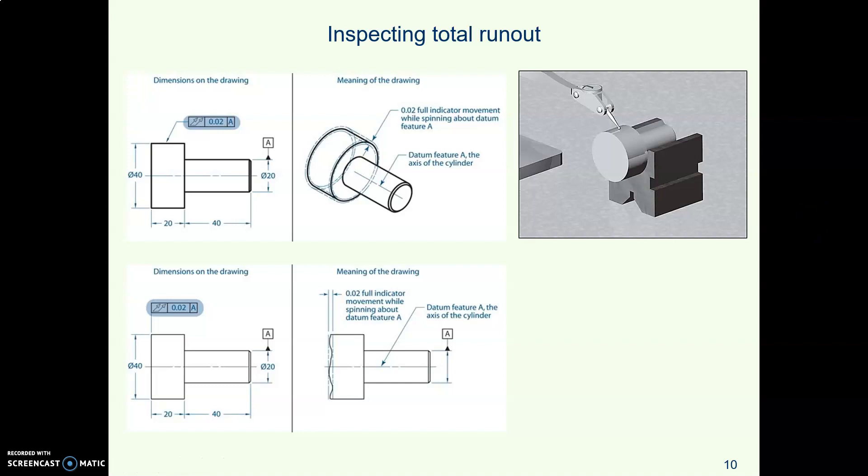Inspecting runout is fairly easy. The inspector will pay close attention to what you've put as datums and that's how they will set up for inspecting. Here is a part that might be a machine pin or something. It has a large diameter that has a total runout applied to it, and there's a datum A.